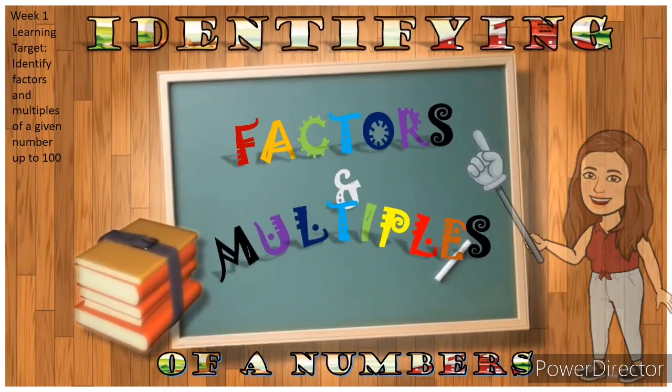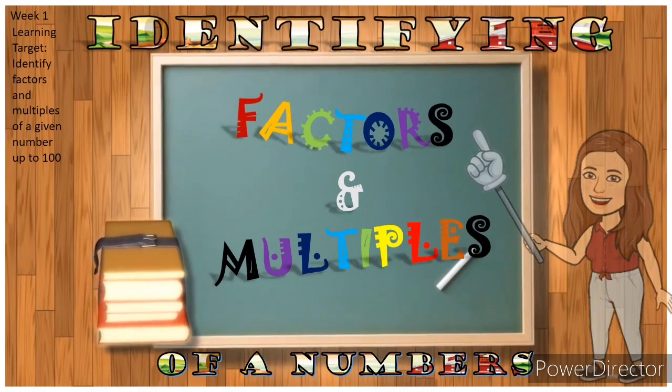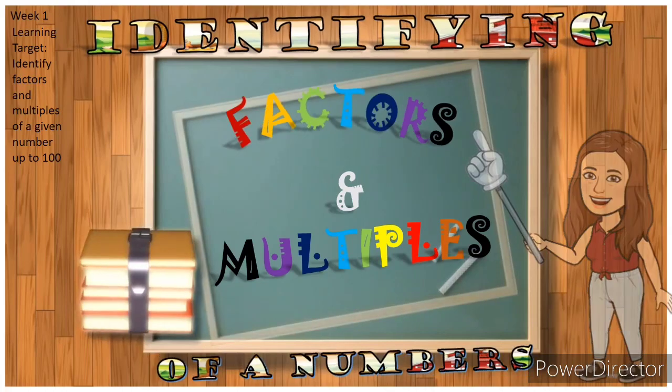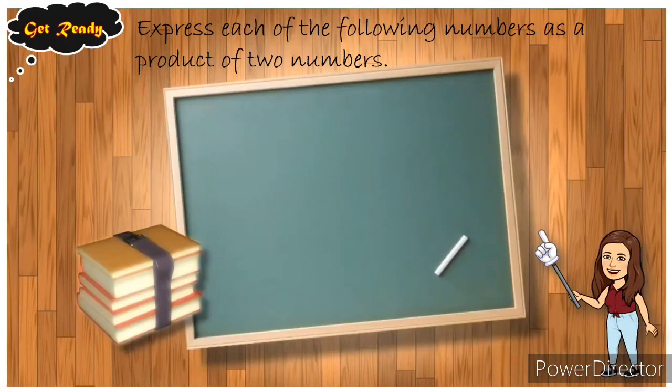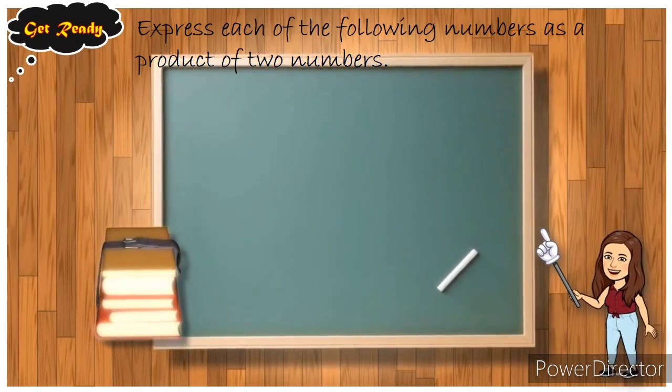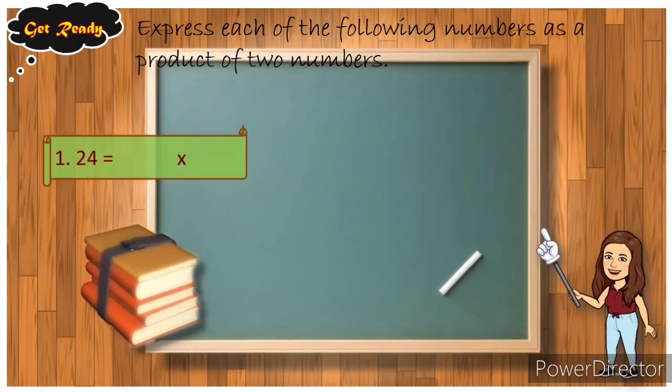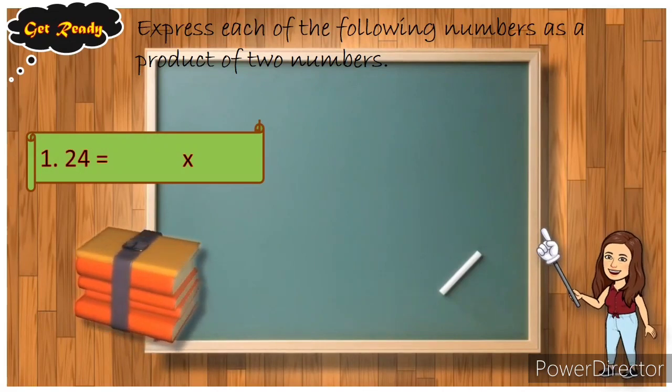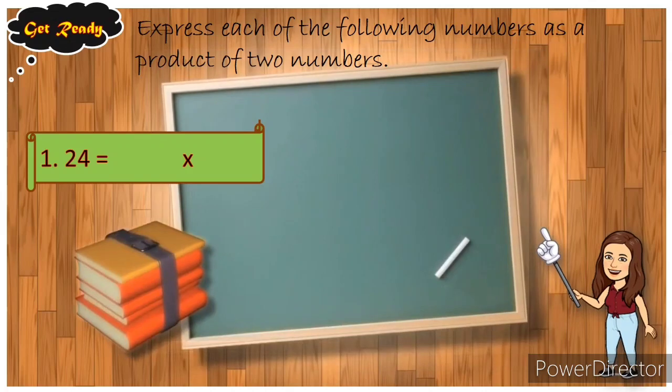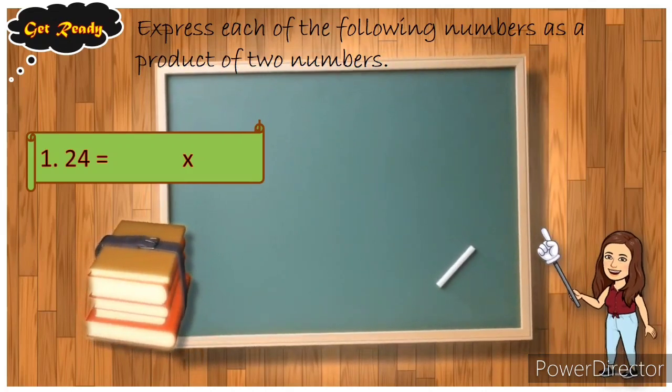Are you ready? Are you excited? Let's start. Get ready. Express each of the following numbers as a product of two numbers. Number one: twenty-four. What are the two numbers that has a product of twenty-four?